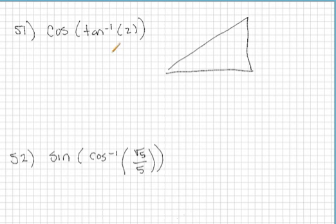So when we talk about tangent inverse or cosine inverse or sine inverse, we're talking about an angle. So we're looking for the cosine of this angle. Let's go ahead and call that angle y, just like we did last time. We don't know what y is yet, but we know that its tangent is 2.